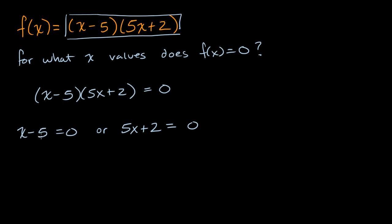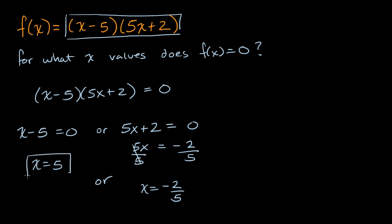If we solve for x: add five to both sides of the first equation and you get x is equal to five. For the second equation, subtract two from both sides to get five x is equal to negative two, then divide both sides by five to get x is equal to negative two fifths. So here are our two zeros. If you input x equals five into f of x, the first expression is going to be zero, and zero times anything — it doesn't matter that this would be 27 — zero times 27 is zero. And if you take f of negative two fifths, the second expression is going to be zero, and zero times anything is zero.